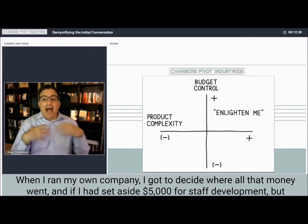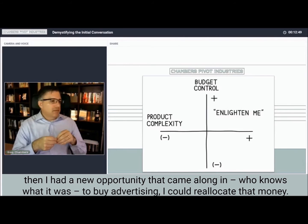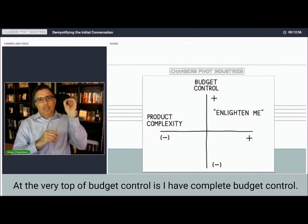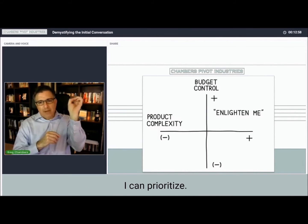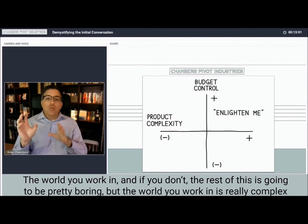Up at the very top though is budget prioritization. When I ran my own company, I got to decide where all that money went. If I had set aside $5,000 for staff development but then had a new opportunity that came along to buy advertising, I could reallocate that money. So at the very top of budget control, I have complete budget control - I can prioritize. On the very bottom it's set for me.